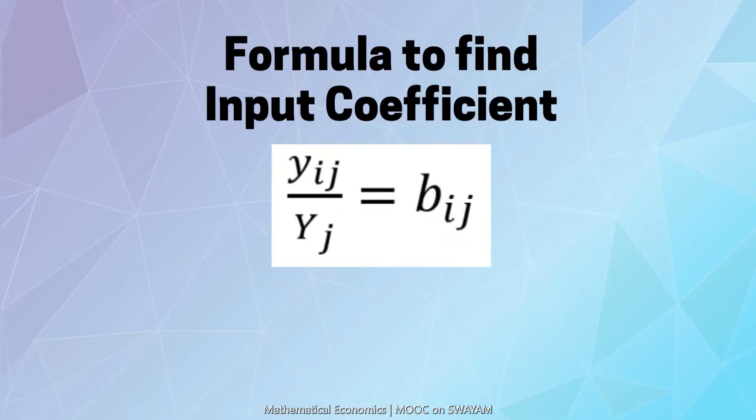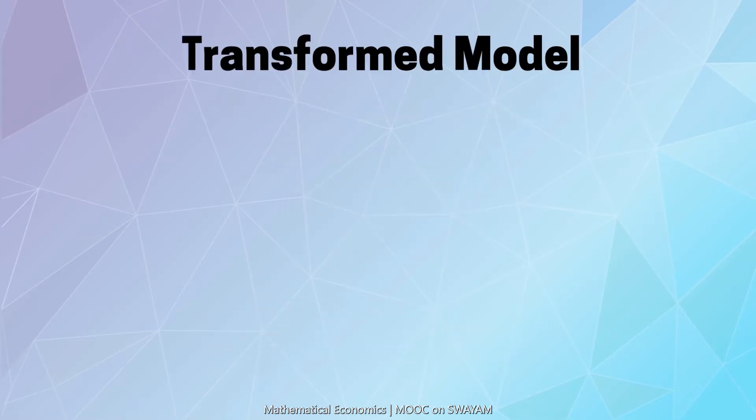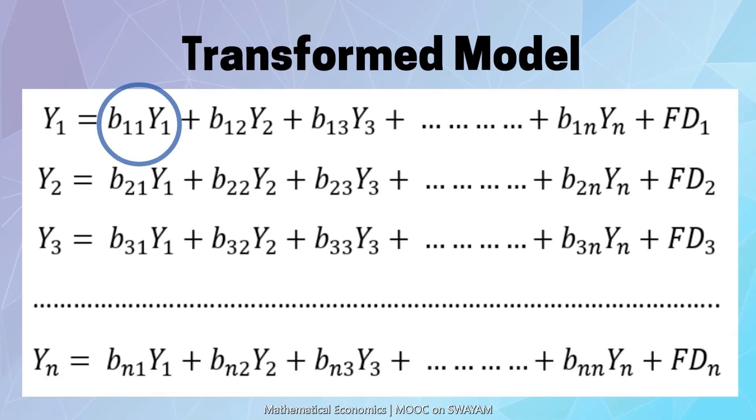Now, this is the mathematical formula for finding input-coefficient. Using this formula, we transform the general form of input-output model. Note that Y11 is now written as b11 into Y1, and similarly the other terms in the equations.